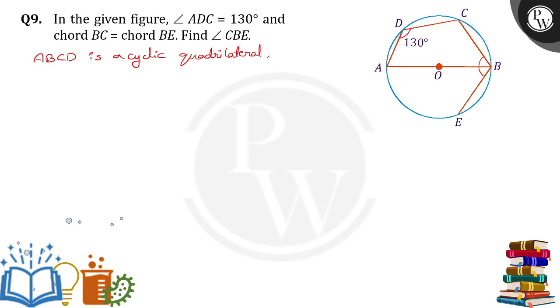In a cyclic quadrilateral, the sum of two opposite angles is equal to 180 degrees. So angle ABC plus angle ADC is equal to 180 degrees. Angle ABC plus 130 equals 180 degrees.